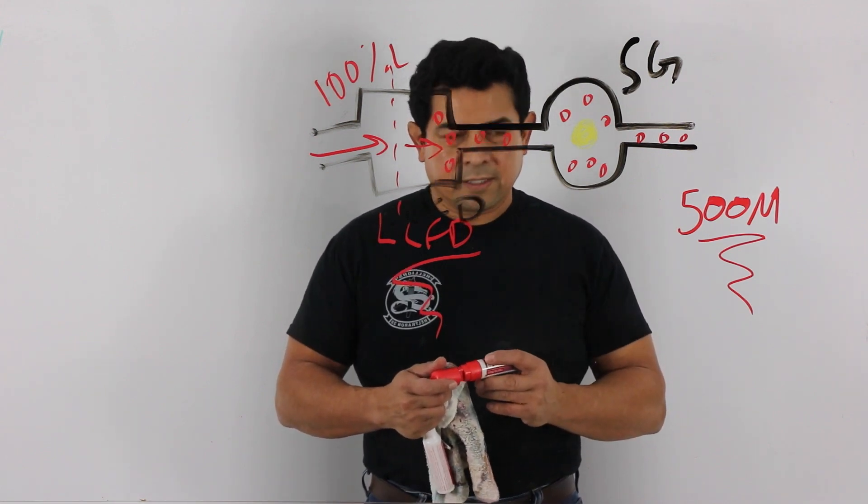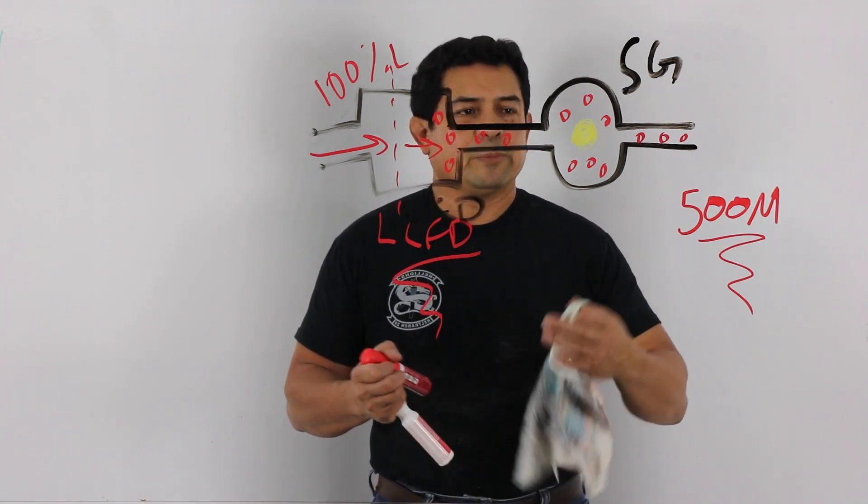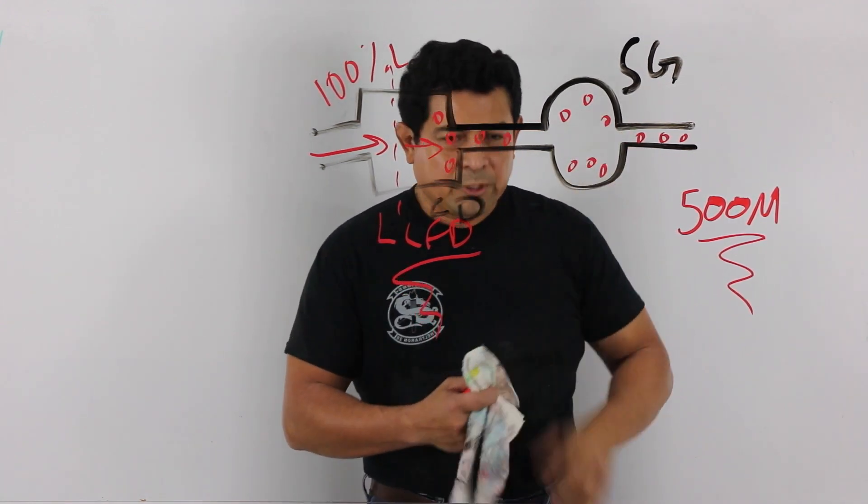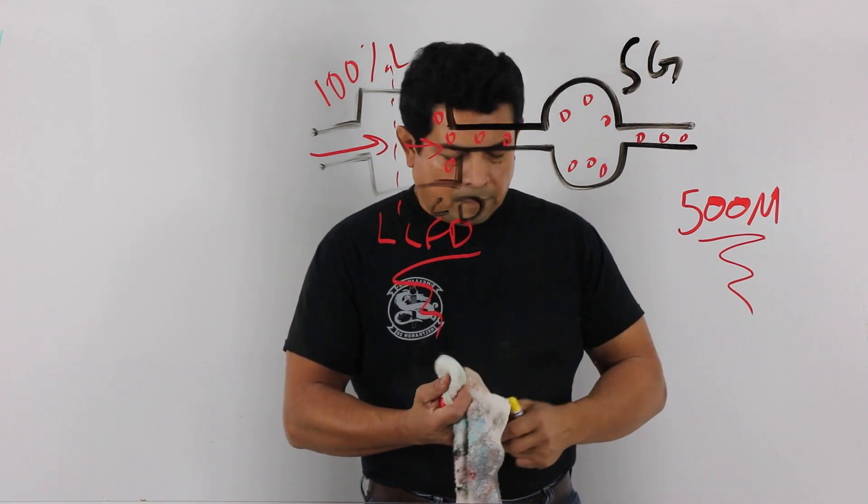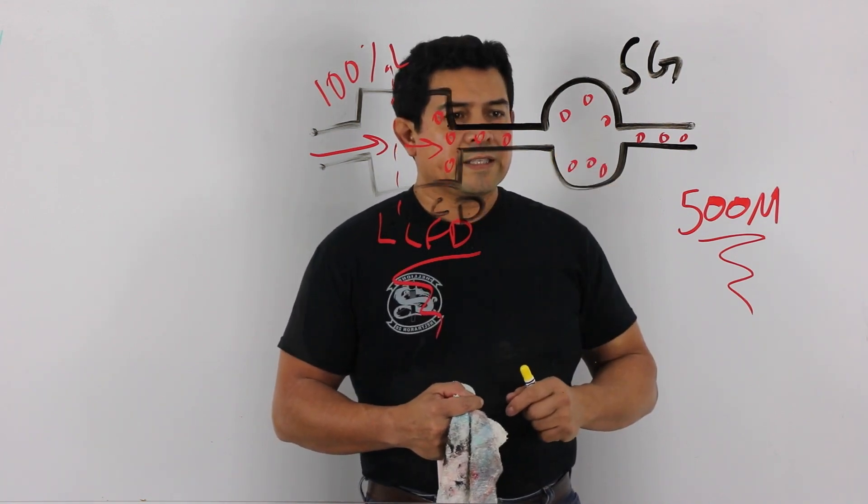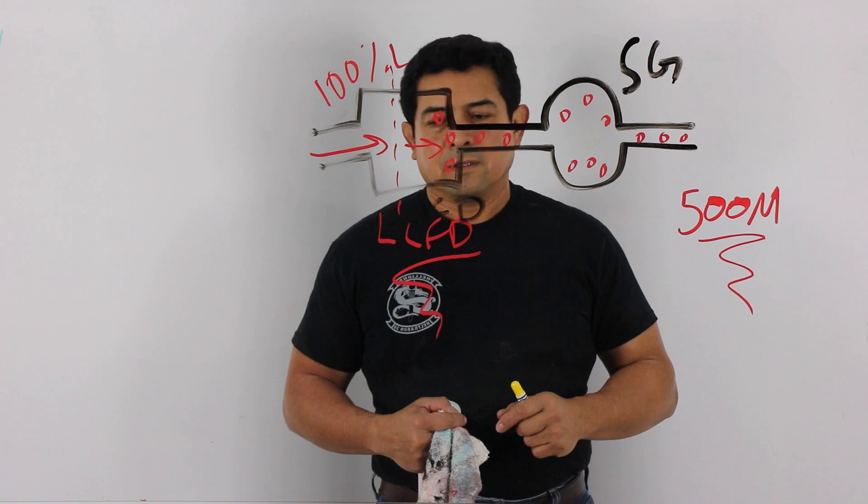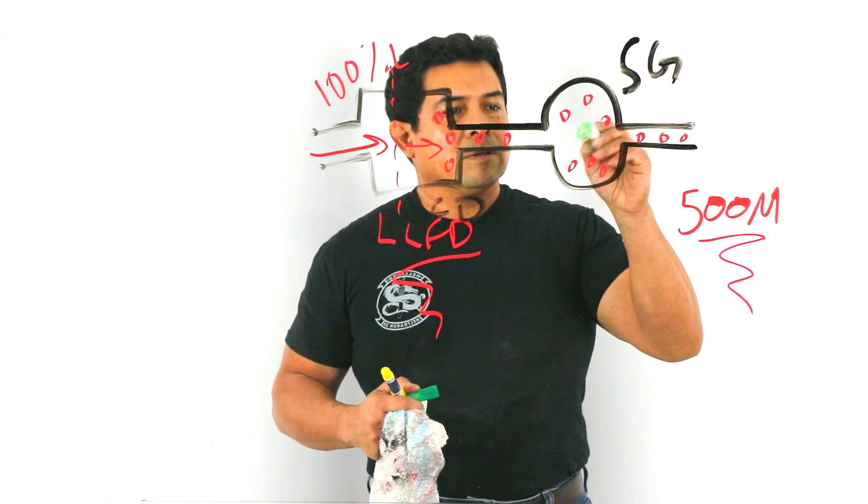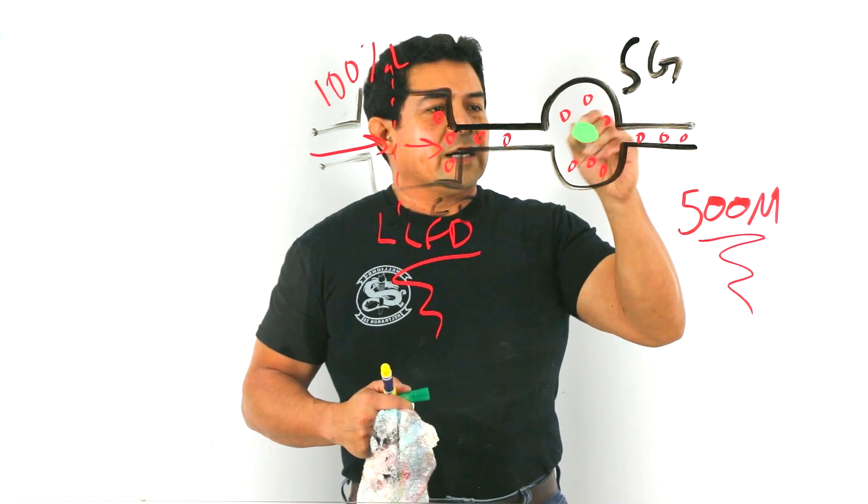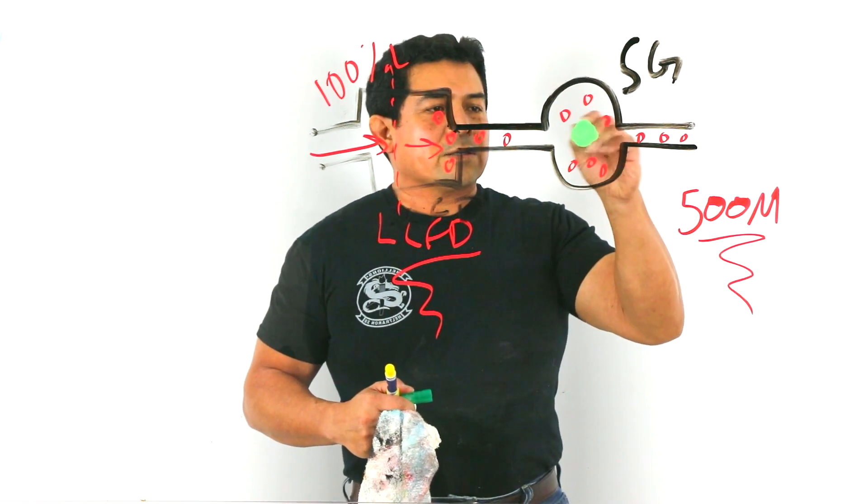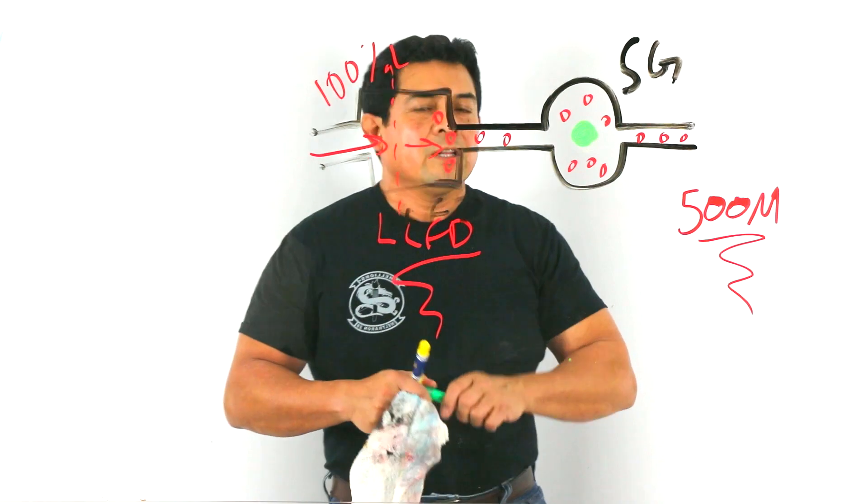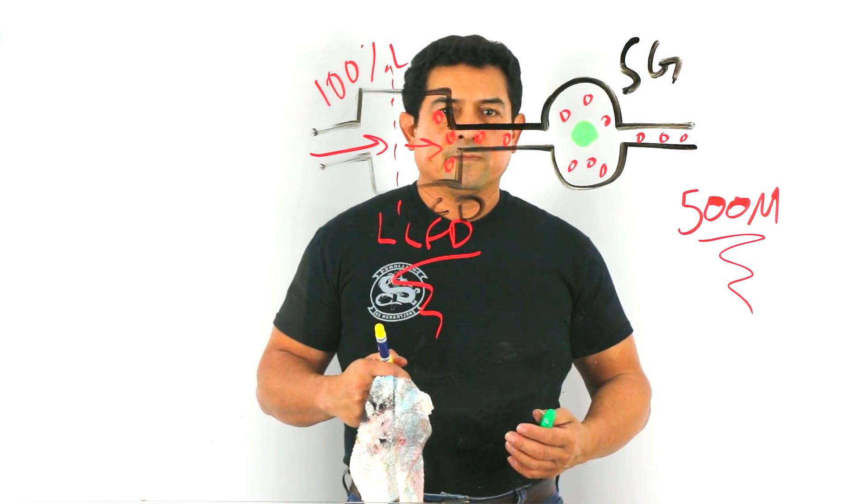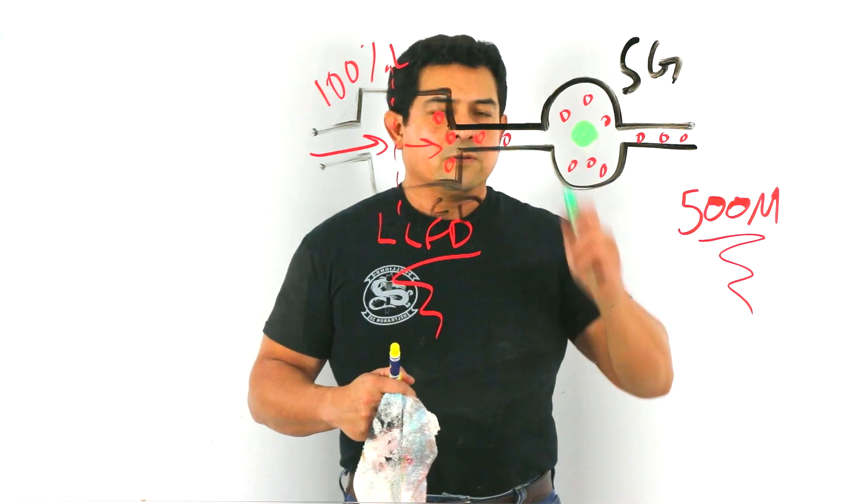Now, once you have done this, well then guess what's going to happen? Yes, you're right. What's going to happen is this, the sight glass is going to turn back to green. It's going to turn back to green. So you're going to see that this dot has turned back to green because now you have dried the system out. You have removed all the moisture that's in there and now your system is okay.